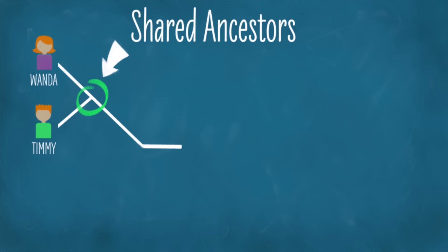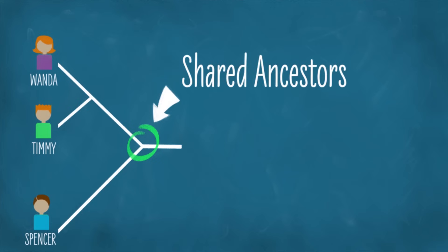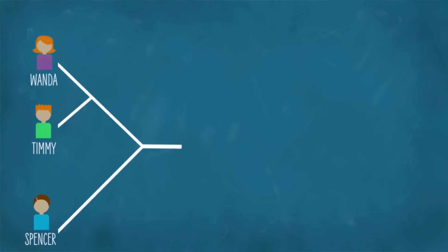Timmy and Wanda are both humans, and of the two people here, Timmy's closest relative is Wanda, other than Timmy himself. They also share ancestors. Cool. But the story doesn't get interesting until I add in Spencer. Timmy, Wanda, and Spencer are all humans. As such, they all share ancestors, but the two that share ancestors more recently will be more closely related to one another.